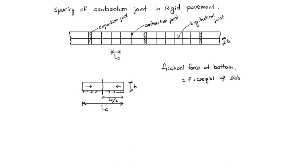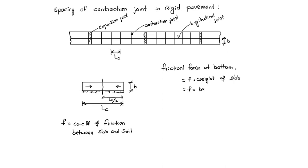So frictional force F equals the coefficient of friction between slab and soil, multiplied by the weight of the slab, which is B into H into Lc/2 into gamma of concrete. That gives us the frictional force at the bottom.